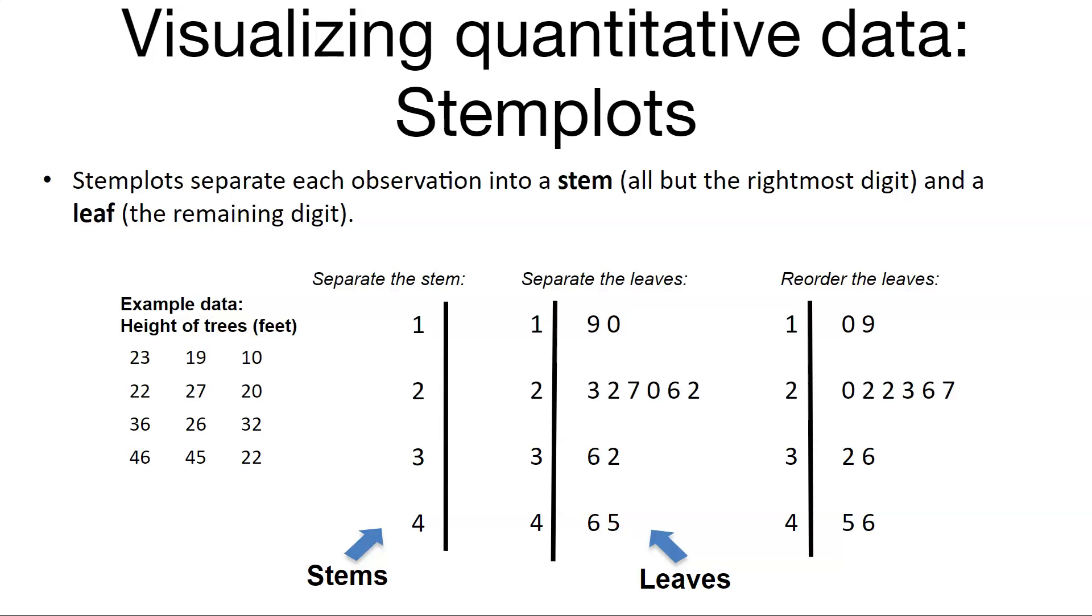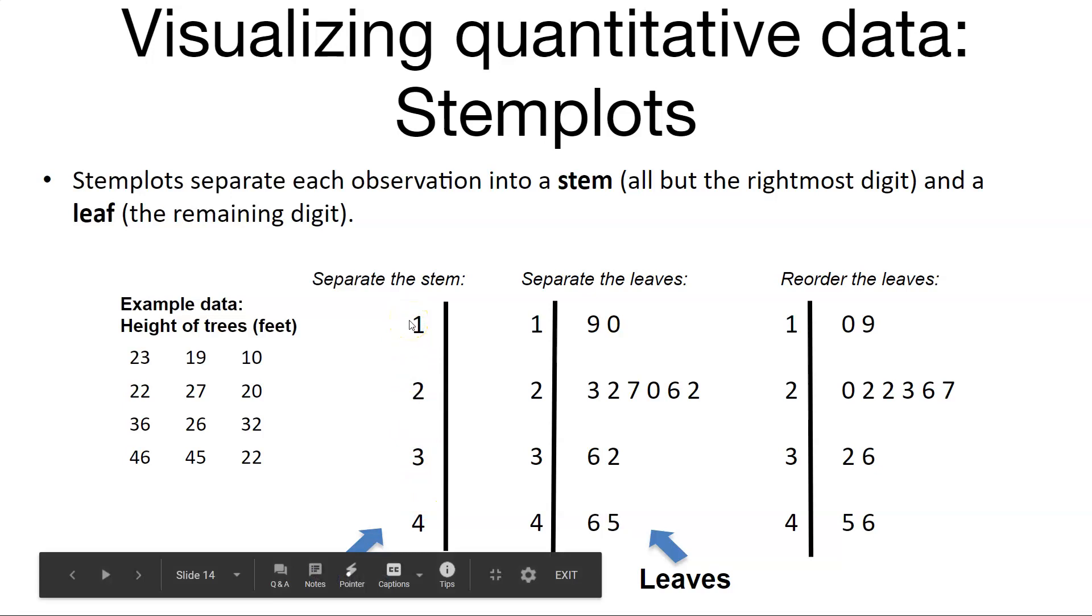Now some of you may have done this if you've taken a statistics class before, what we call stem plots or stem and leaf plots. Now we're moving on to quantitative data. And so now we've got an example data set here. We collected some heights on trees. So you see the data set here off on the left. What we can do with those heights of trees is to separate them into the stem. And so everything between 10 and 20 feet, 20 and 30 feet, 30 and 40 feet, and above 40 feet might go in the stem.